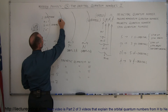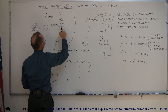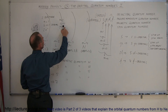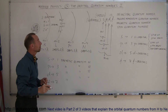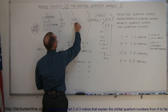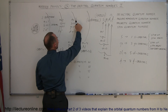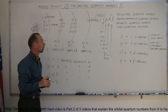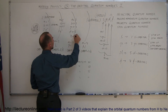In the N equals 2 level, we have one S orbital and three P orbitals, and in each you can have two electrons. So four orbitals times two means you can have eight electrons. In the N equals 3 level, we have one S orbital, three P orbitals, and five D orbitals. Since each orbital can have two electrons, that means you can have 18 electrons.